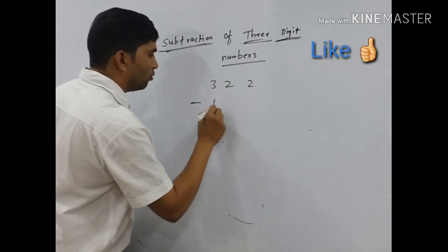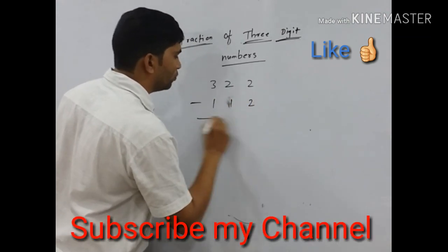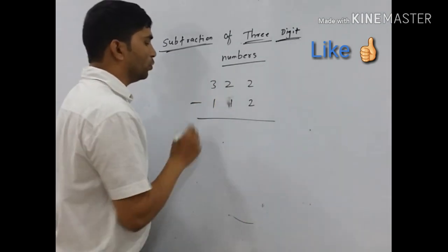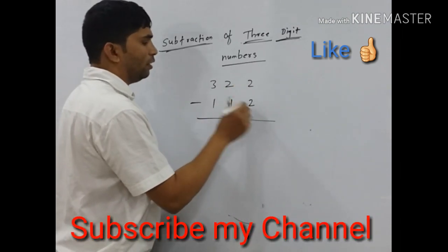Subtract with 112. Here is three digit number is 322 and 112. 322 subtract by 112.